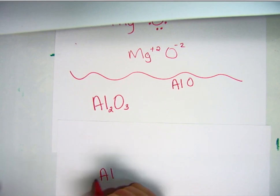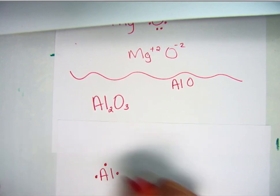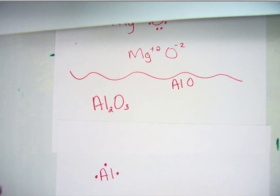Each aluminum—going to go ahead and draw out the valence electrons in the form of a Lewis dot diagram. That's what this right here is, a dot diagram. Aluminum has three valence electrons and oxygen has six. One, two, three, four, five, six.